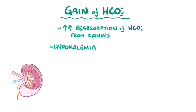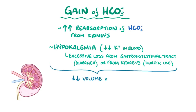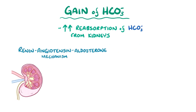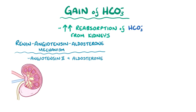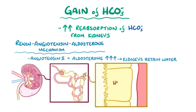Another stimulus is hypokalemia, or decreased levels of potassium in the blood, which can be due to excessive loss from the gastrointestinal tract, like in diarrhea, or from the kidneys due to diuretic use. When there's less volume or less potassium in the extracellular space, it triggers the renin-angiotensin-aldosterone mechanism. As a result, angiotensin II and aldosterone levels rise, and the kidneys start to retain water and reabsorb more bicarbonate in the proximal convoluted tubule. The alpha-intercalated cells of the distal convoluted tubule and collecting ducts secrete more hydrogen ions into the urine, and also make new bicarbonate ions, which get reabsorbed.